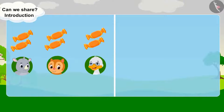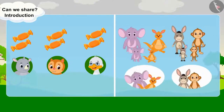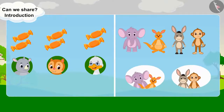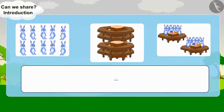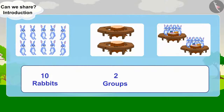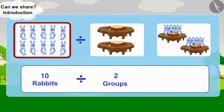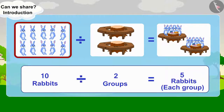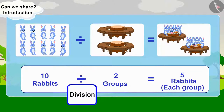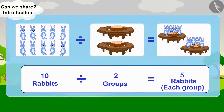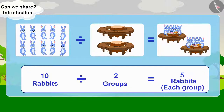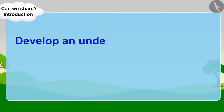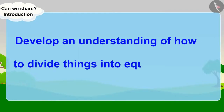Distributing things equally among people, or making equal groups of people or things, is called division. Here we are forming two equal groups of ten rabbits. Dividing ten rabbits into two equal groups gives five rabbits in each group. This is the total number of things to be divided. This is a symbol of division. This is the total number of groups, and this is the total number of things in each group. In this lesson, we will develop an understanding of how to divide things into equal groups.